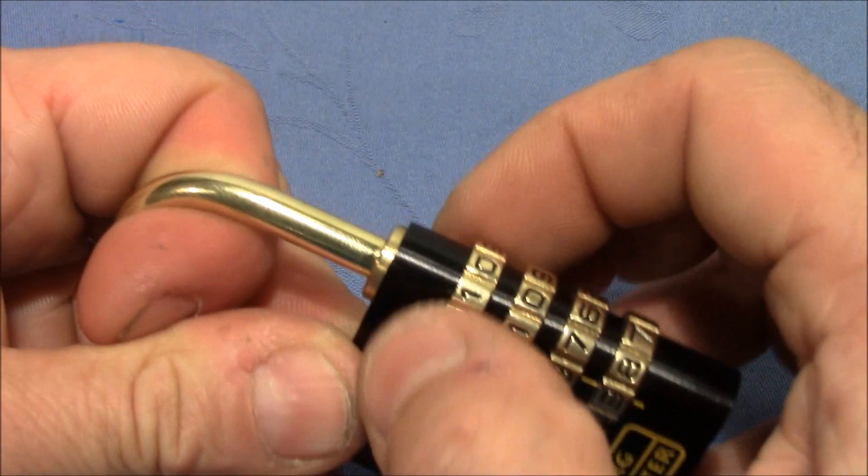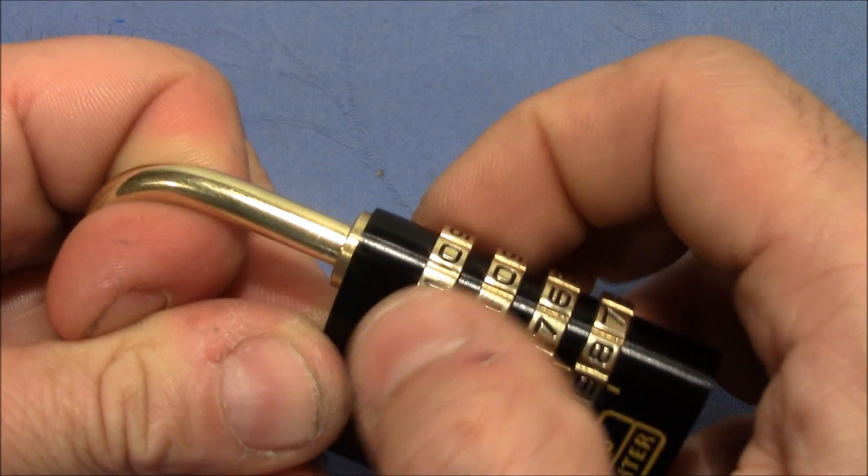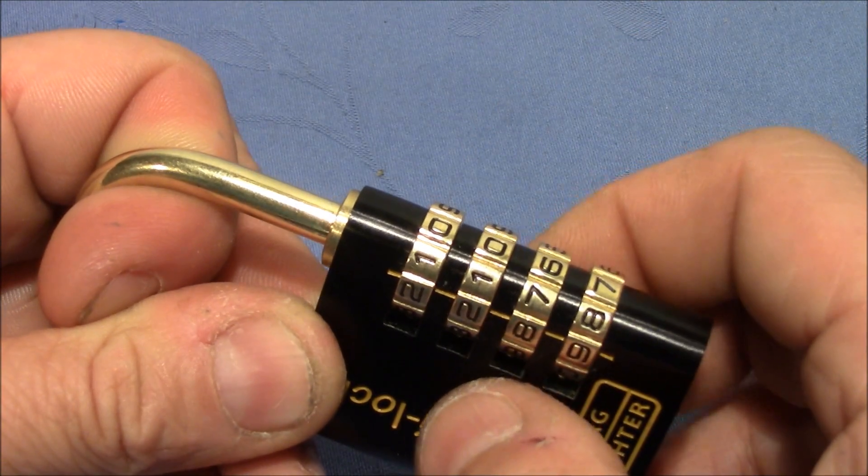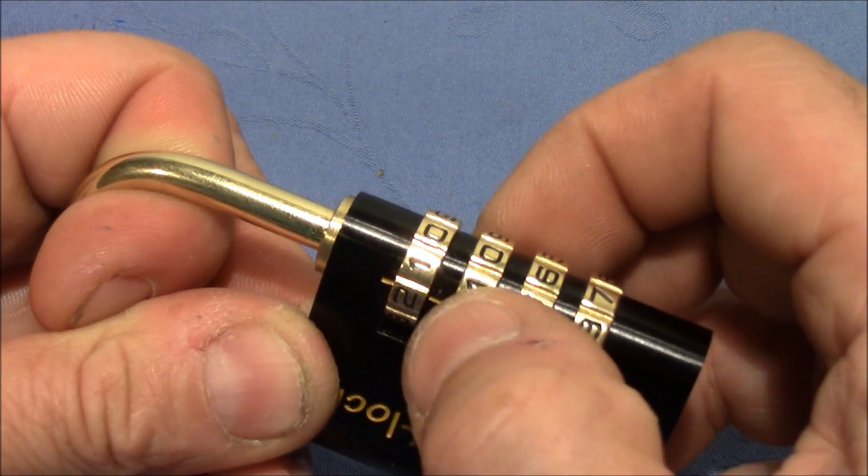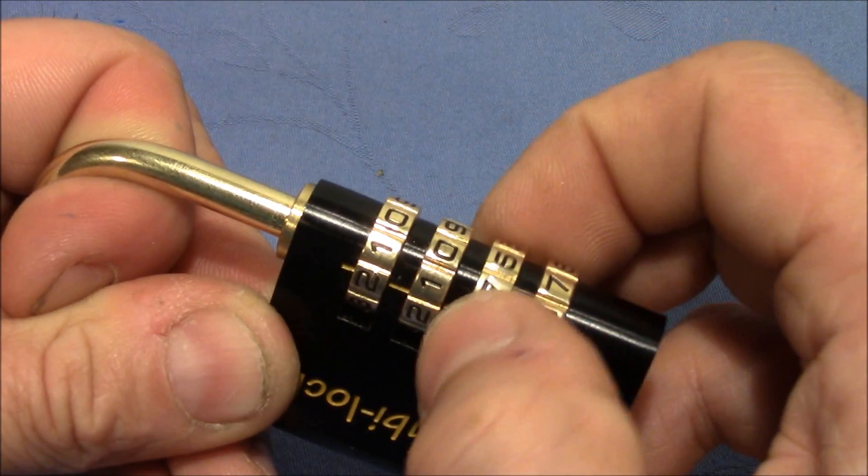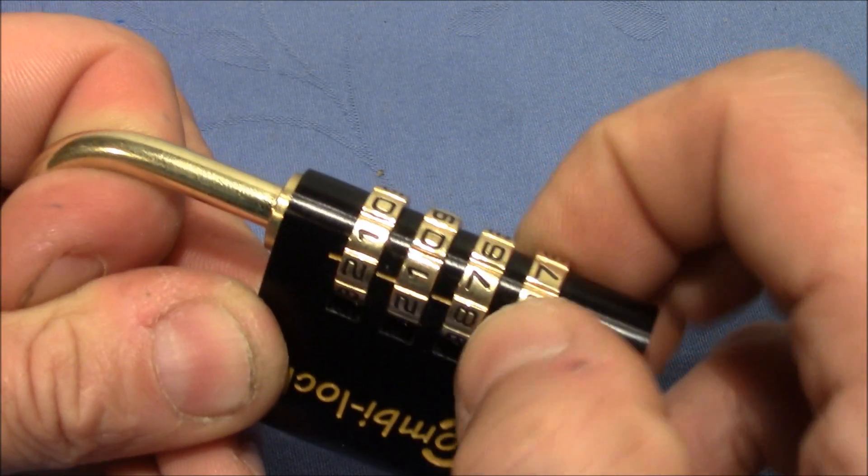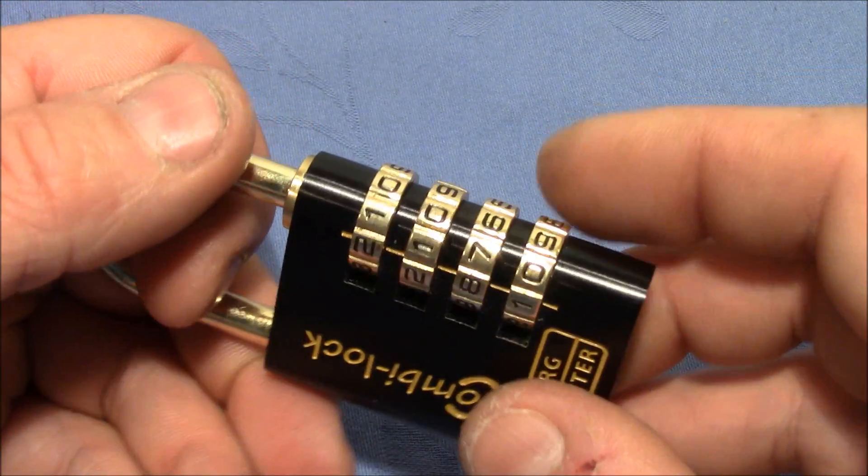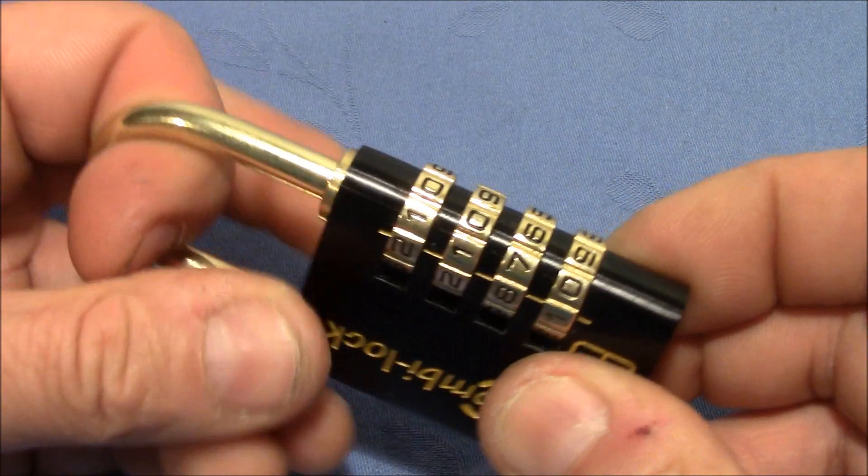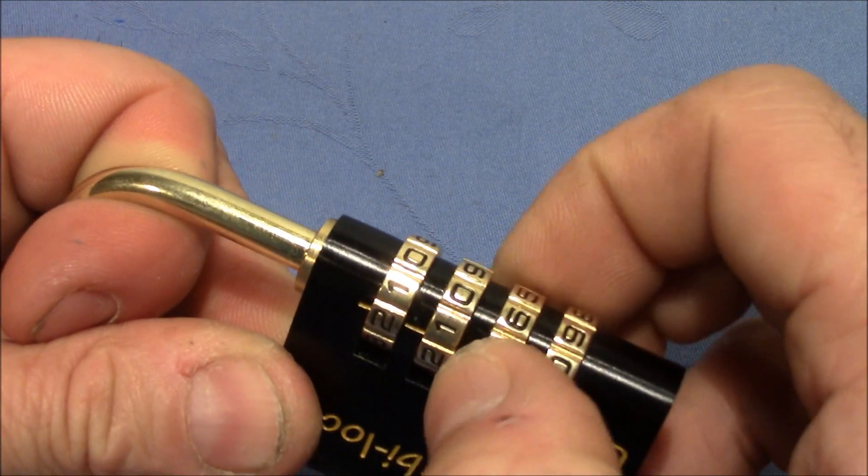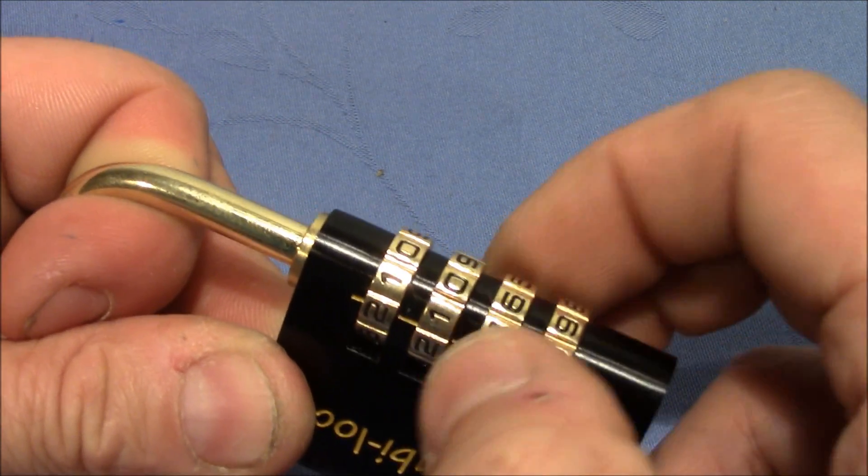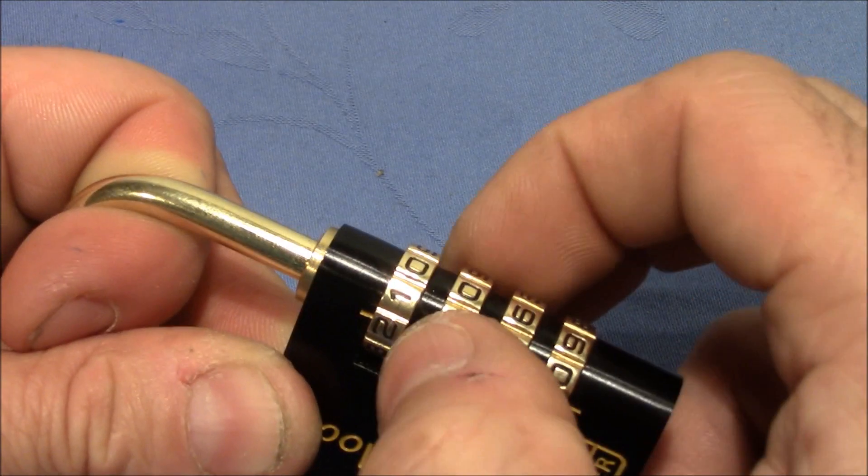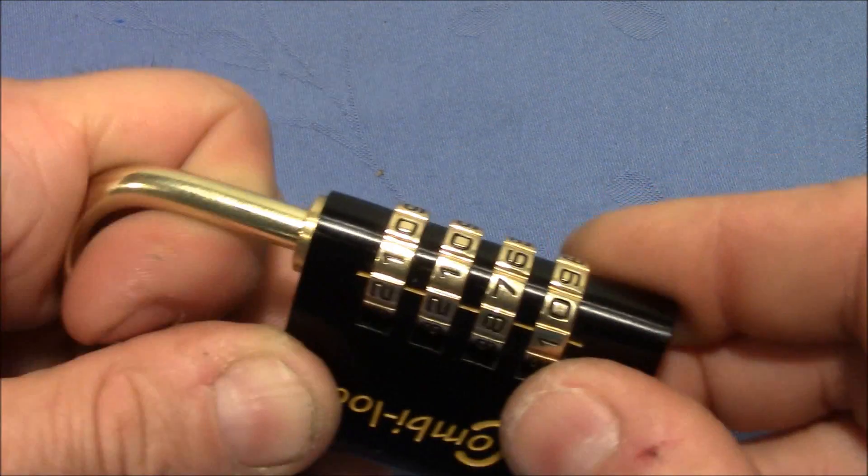So I pull on the shackle again and see what the wheels say. So this is loose, has a lot of play left and right. That means either we are in a true gate or the wheel is currently not binding. This is also loose, this is somewhat loose and this stuck. So I turn by two numbers because gates are on every second number. I pull on the shackle again and still this is stuck. So second is also not quite moving. The third I mean. This is good, this is good. So this gives the most resistance.